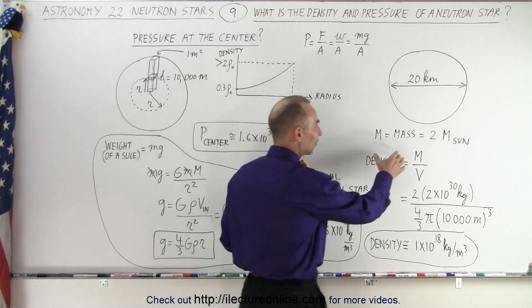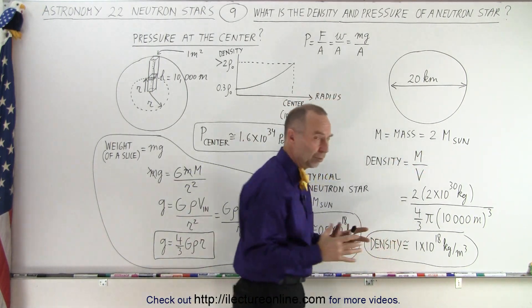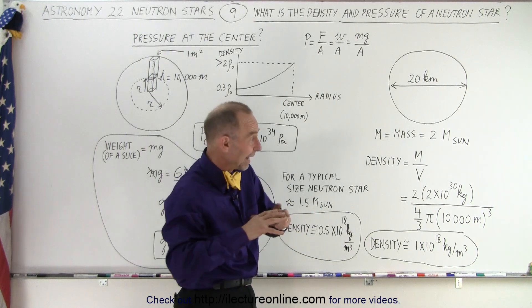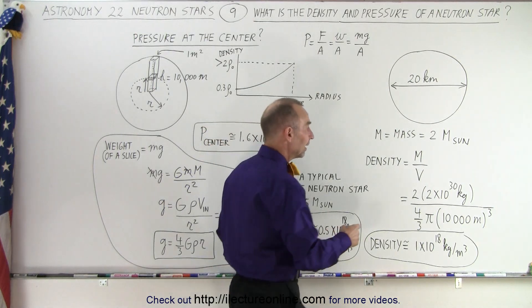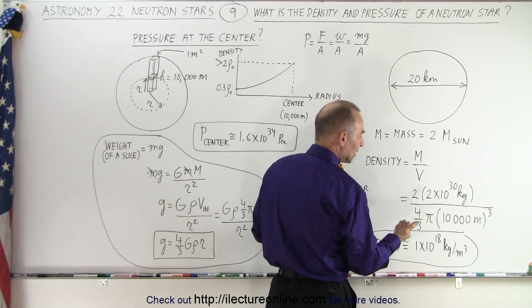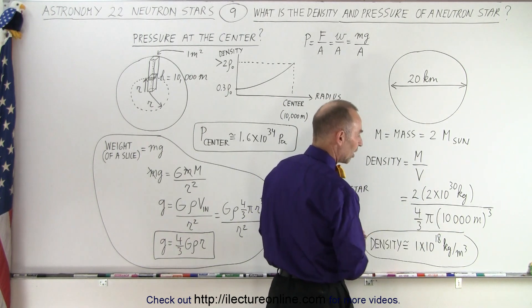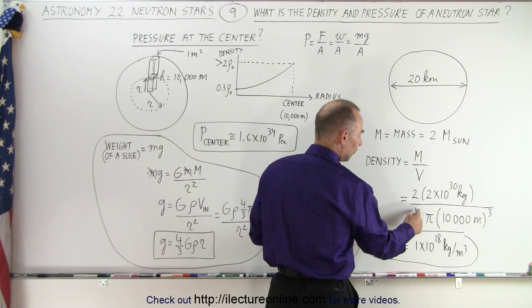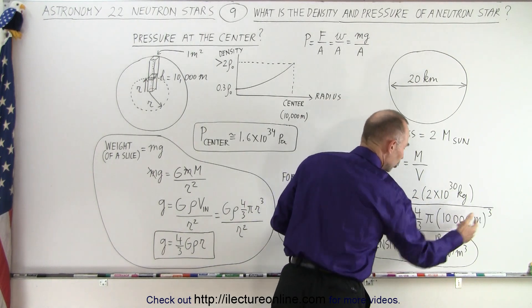So in this case, if we take the mass to be twice the mass of the sun, which is probably a little bit bigger than average neutron star, then we take twice the mass of the sun divided by the volume, assuming that the radius is about 10 kilometers or 10,000 meters. So twice the mass of the sun, four-thirds pi times the radius cubed,